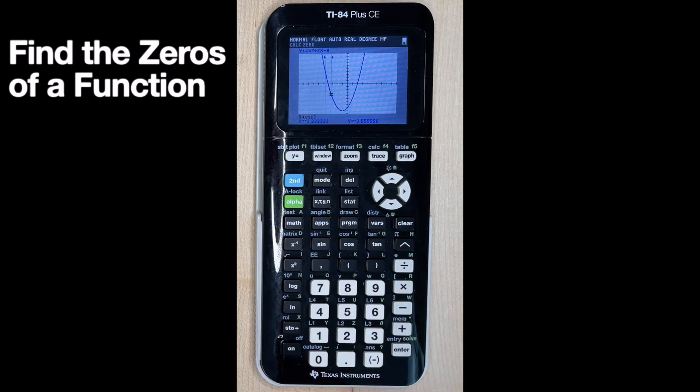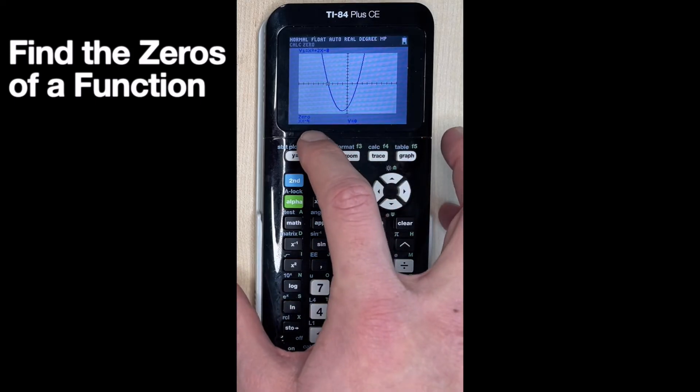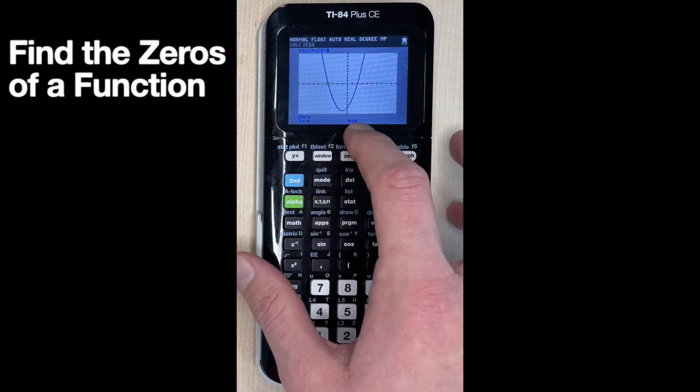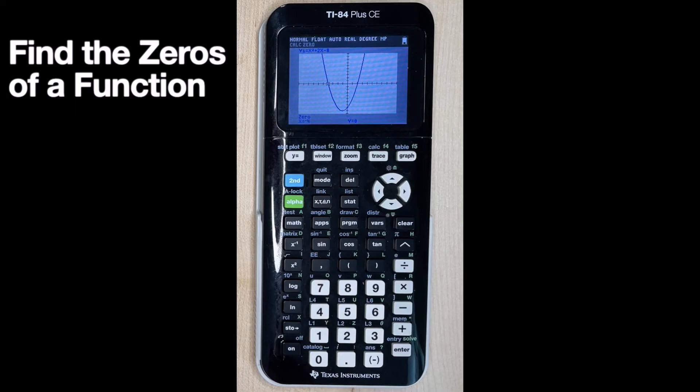And now it says guess. So we hit enter a third time, and it tells us our first zero. So here we get negative four comma zero. So our answer there would be x is equal to negative four.